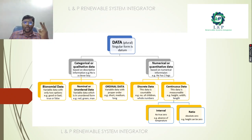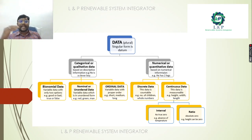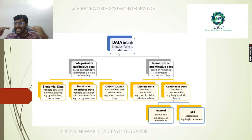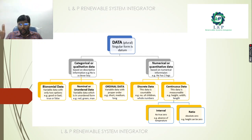Variable data with only two options — either good or bad — comes under binomial data. Unordered data is variable data in unordered form, for example red or green. Ordinal data can be short, medium, or long. Discrete data is countable — for example, whole numbers or number of children. Continuous data includes height, weight, and length. For interval, there is no true zero — absolute zero is an example.